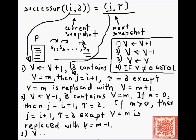Case 3 is the easiest one — it's a no-op, so nothing changes. We simply go to the next instruction: j = i+1, and τ remains the same as σ.